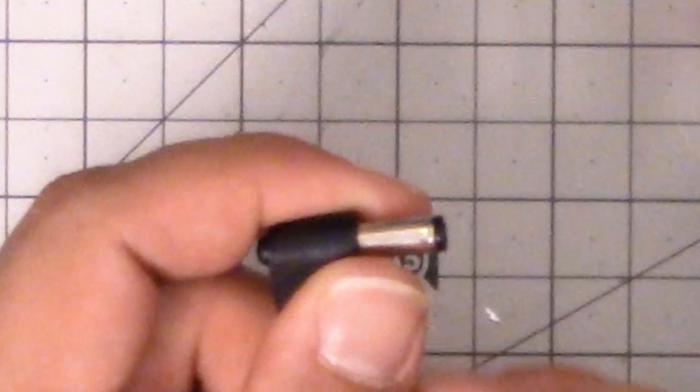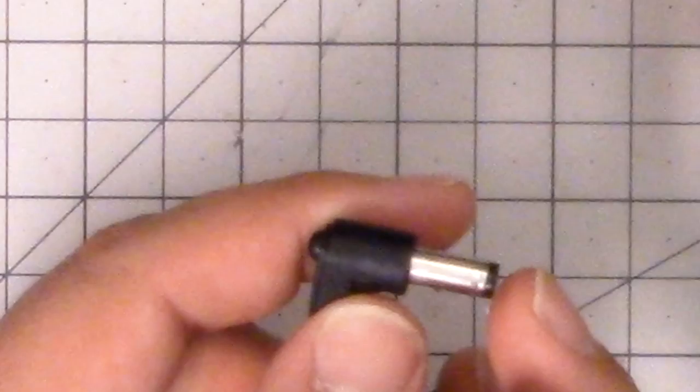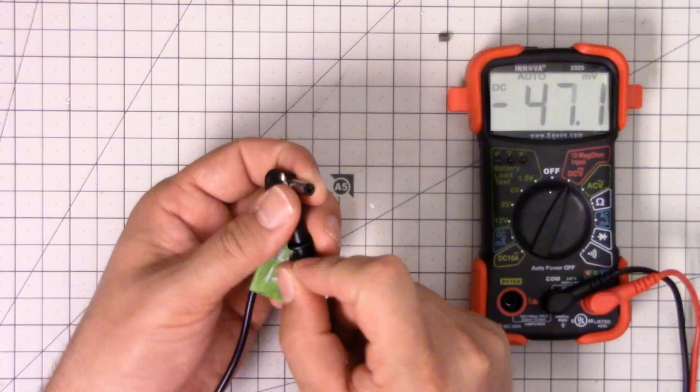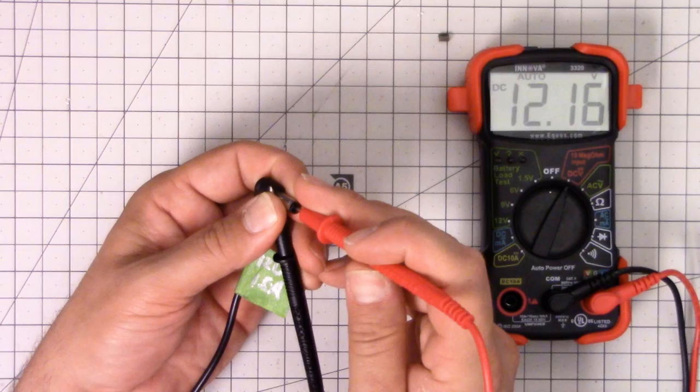Unlike with a lipo though, if I short this, the worst thing that's going to happen is I'm going to burn out the little DC, the wall wart, which is not the end of the world. We're going to assume that the outside is ground. We're going to touch ground to the outside. We're going to assume that the inside is positive. We're going to stick the red one on the inside and 12.16 volts.